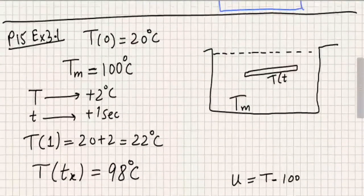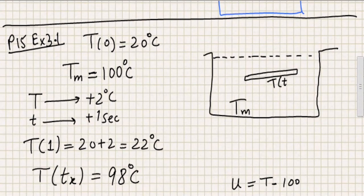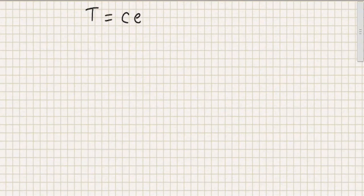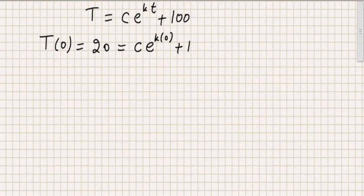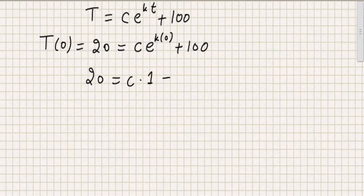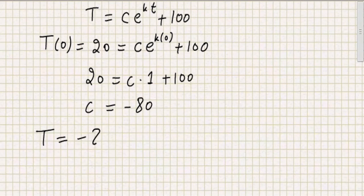Now we want to find the values of these two arbitrary constants. First, I use the initial value T(0) = 20 degrees centigrade in the general solution T = C·e^(kt) + 100. Substituting t = 0: 20 = C·e^(k·0) + 100. Since anything raised to the power 0 is 1, we get 20 = C·1 + 100, so C = minus 80. The general solution now becomes T = -80·e^(kt) + 100.